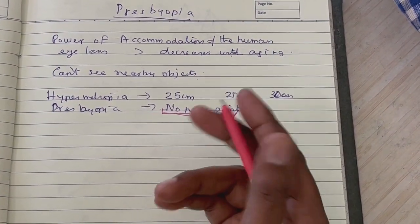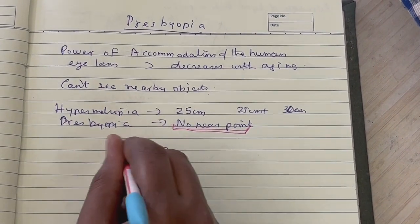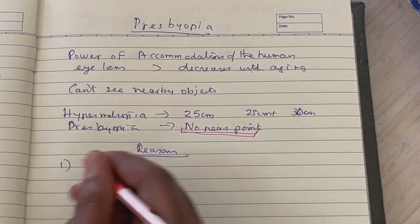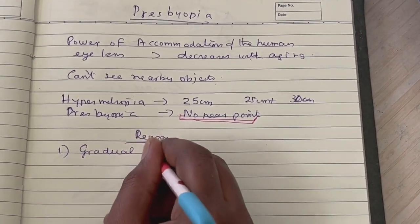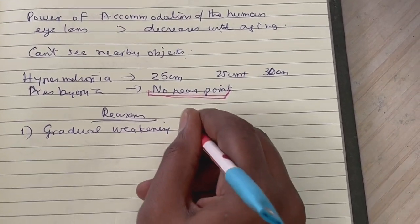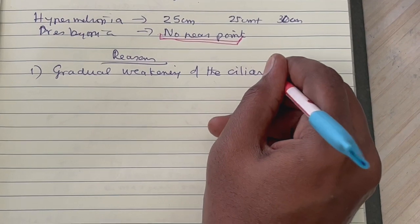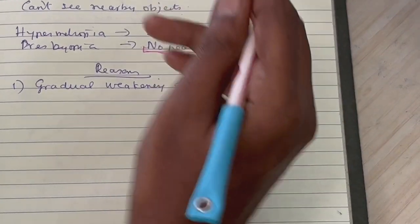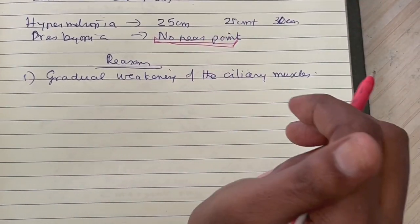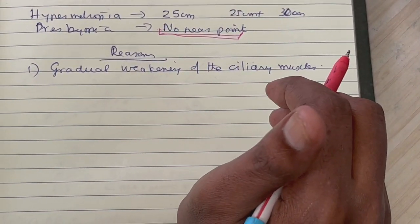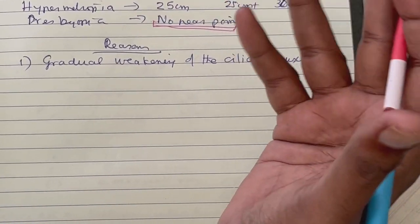Now what are the reasons for this particular condition called presbyopia? There are basically two reasons. The first one is a gradual weakening of the muscles which hold the crystalline human lens - that is the ciliary muscles - which means that the muscles can't pull the lens to change the curvature of the lens and alter its focal length. So that power of accommodation of the human eye lens is gradually lost.